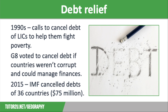By 2015, the IMF had cancelled the debts of 36 countries who met these conditions, providing debt relief of over 75 million dollars. This meant that these countries could spend money on providing free universal education, providing safe access to water and sanitation, and providing more clinics and vaccination programmes, therefore increasing the quality of life of their people.